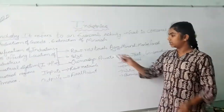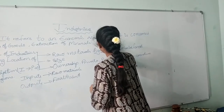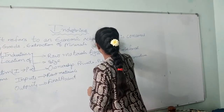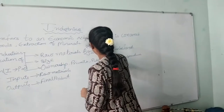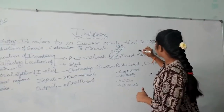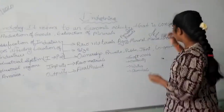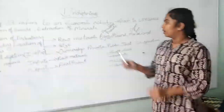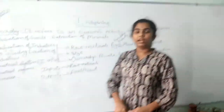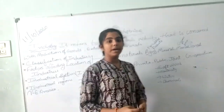Coming to agro-based industries. Agro-based industries depend upon agricultural products. For example, a weaving or textile company depends upon cotton, which is an agricultural product.